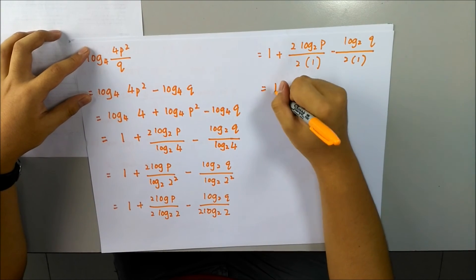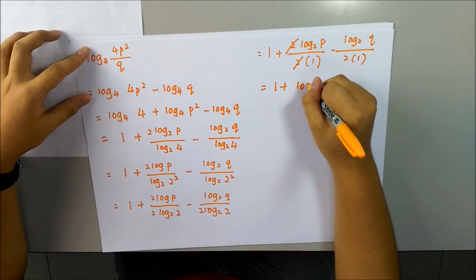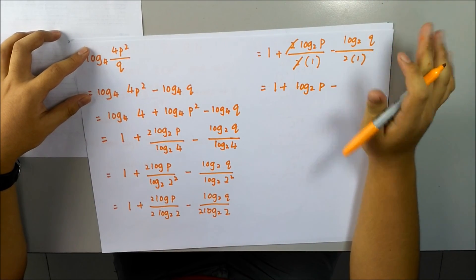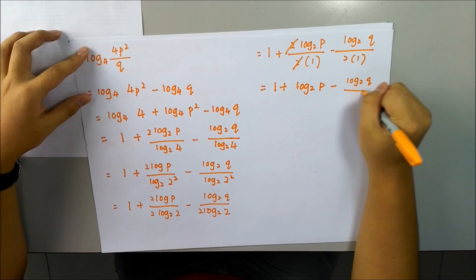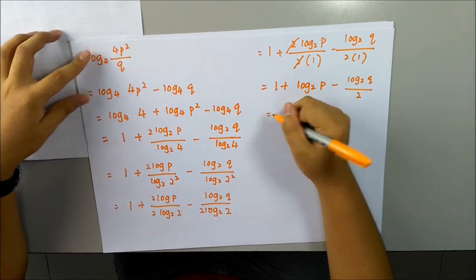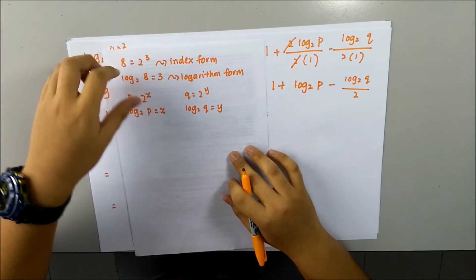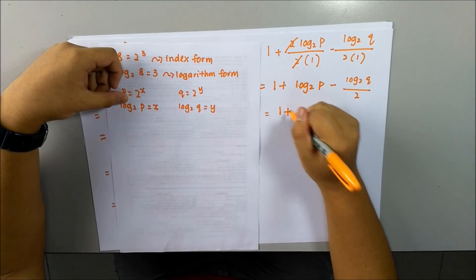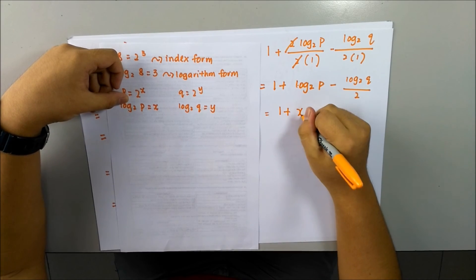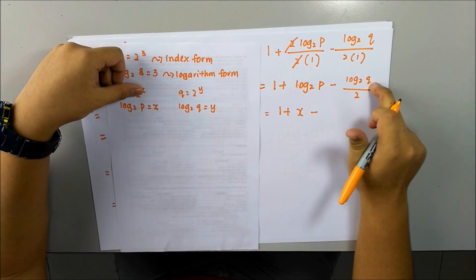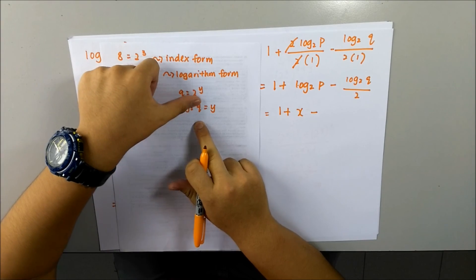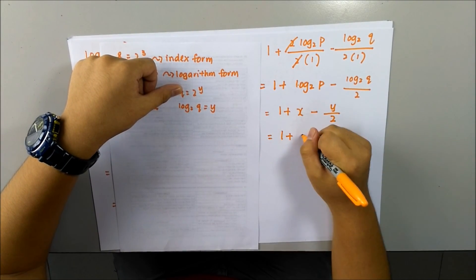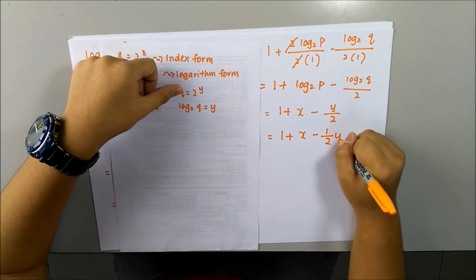This one, cancellation, we left 1 plus log 2 of p minus, this one we cannot cancel. Now we can substitute in. Log base 2 of p equals x. So 1 plus log base 2 of p equals x, minus log base 2 of q equals y. Log base 2 of q equals y, so y over 2. Simplify it: 1 plus x minus 1 over 2 y. That's it.